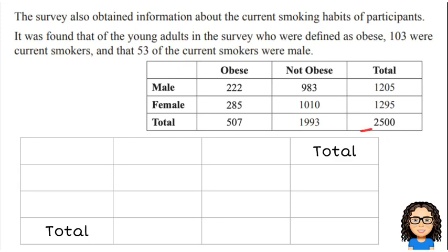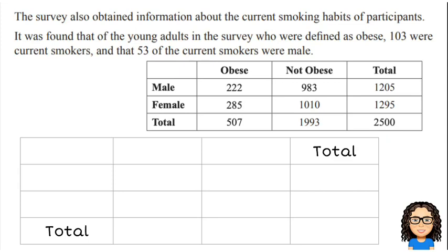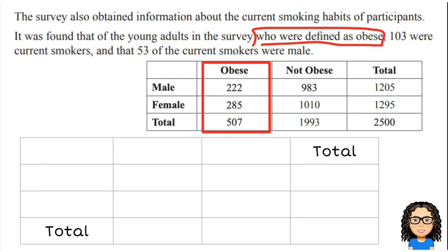We've been given some additional information, and you can see I've got an empty table below. The reason for that is as soon as I've been given more information that talks about another event, that tells me I need to compile this information together and make a new table. So in the question, we're talking about young adults in the survey who were defined as obese — so we're interested in the people defined as obese.